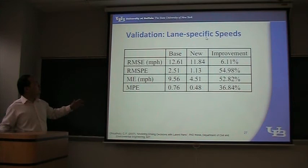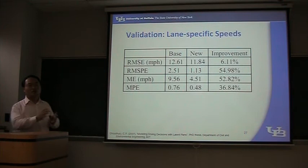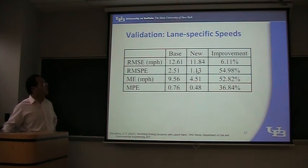The second validation uses lane-specific speed. They compare the average speed for each station and each lane, and calculate root-mean-square error or root-mean-square percent error. They found some improvement there as well.